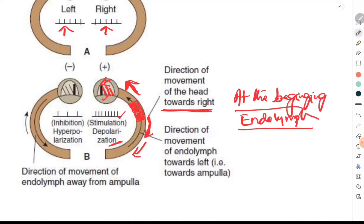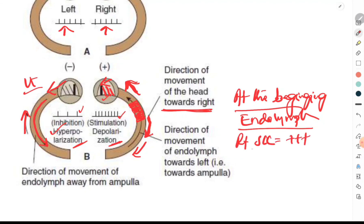On the left semicircular canal, the canal moves in one direction but the endolymph moves in the opposite direction. This causes the stereocilia to move away from the kinocilium, which causes hyperpolarization, and the number of impulses generated in the left semicircular canal decreases. So at the beginning of rightward head movement, the right semicircular canal is stimulated and the left semicircular canal is inhibited.